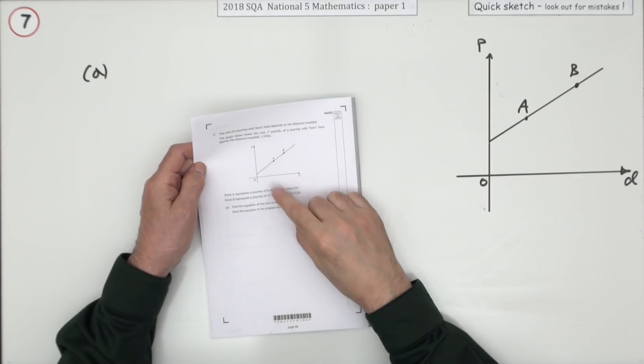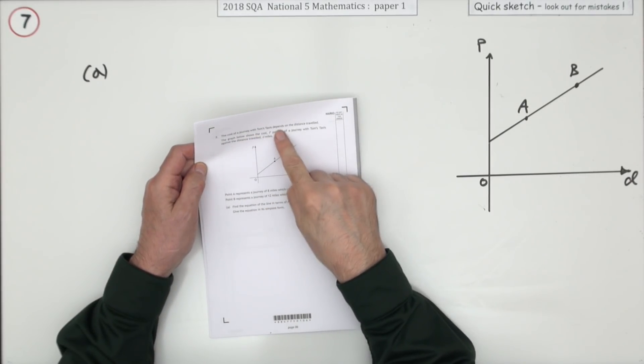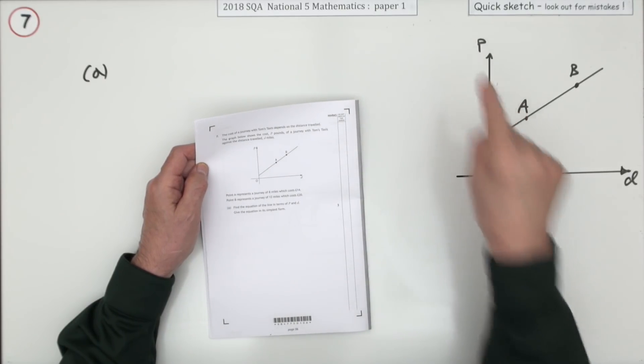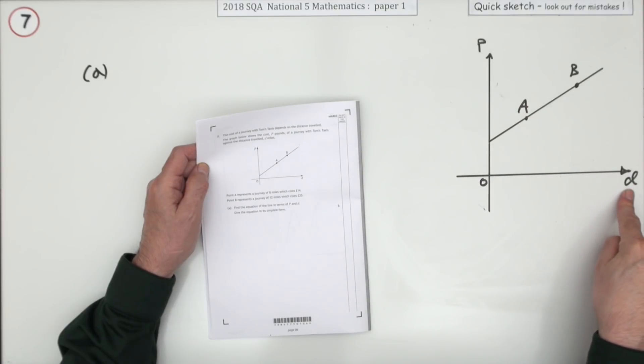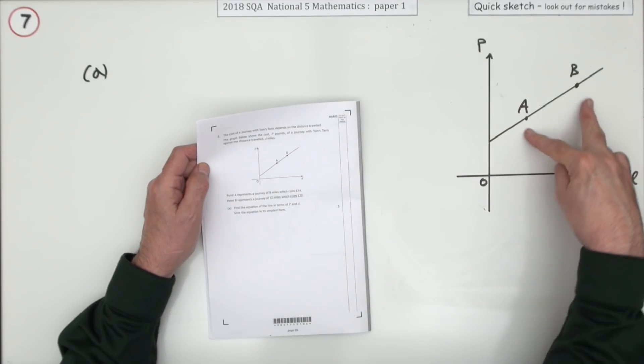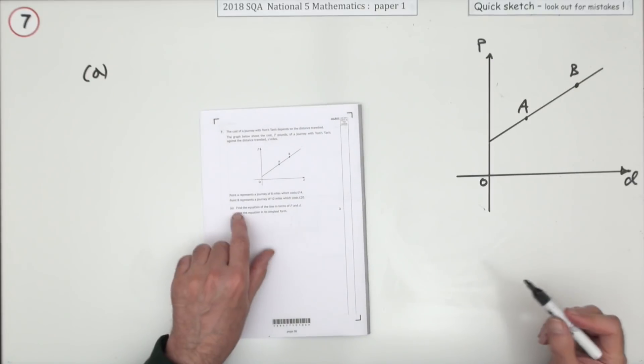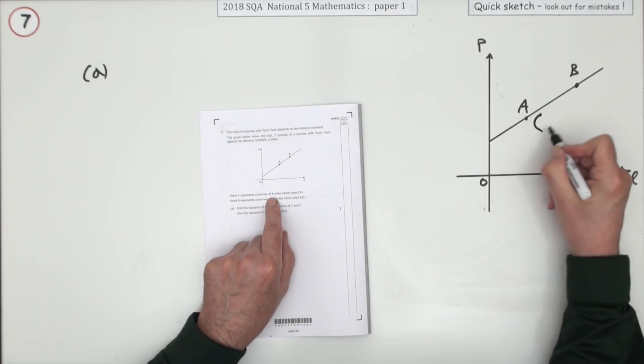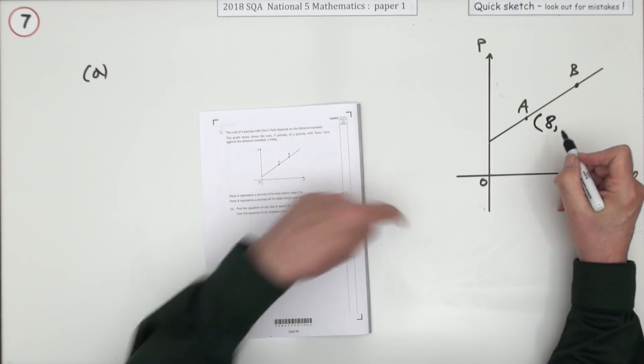Number seven, the cost of a journey depends on the distance traveled. This graph shows how the cost in pounds varies with the distance d miles traveled. These are two points on the journey and it's given you some figures for them. a represents eight miles is first, so that's like the coordinate a along, and the cost was 14, so 14 up.